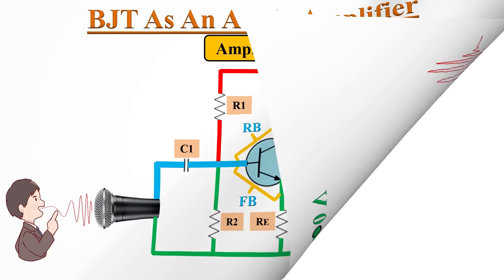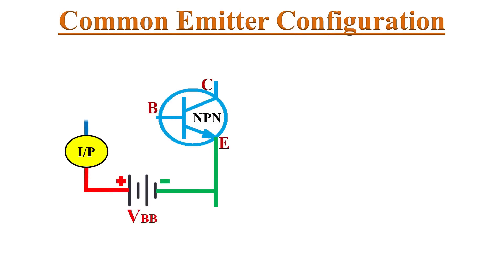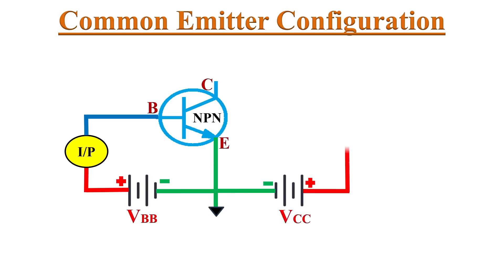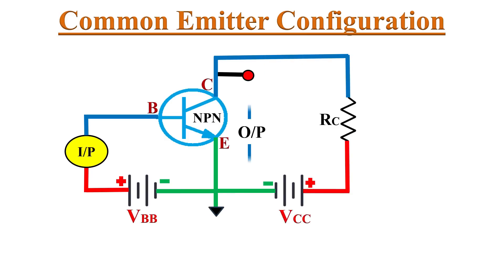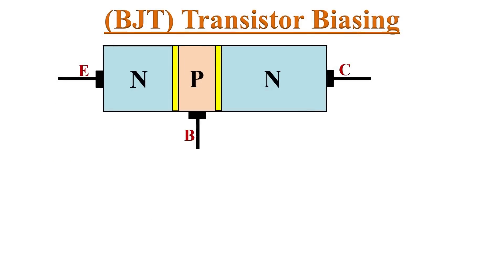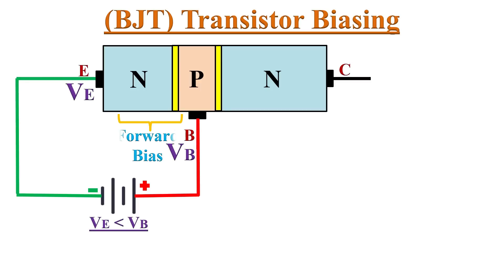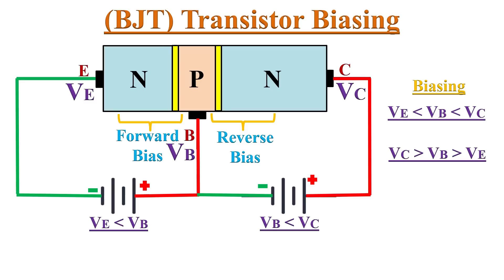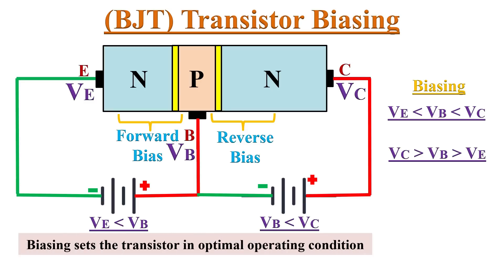Let's construct a common emitter amplifier. In this configuration, the input signal is applied between emitter and base terminal, and the output is measured between emitter and collector terminal. That means the emitter terminal is common for both input and output. In a BJT there are two depletion regions. To use BJT as an amplifier, we must keep the base-emitter junction forward biased, while the base-collector junction must be reverse biased. This is called biasing of a BJT — biasing sets the transistor in optimal operating condition.